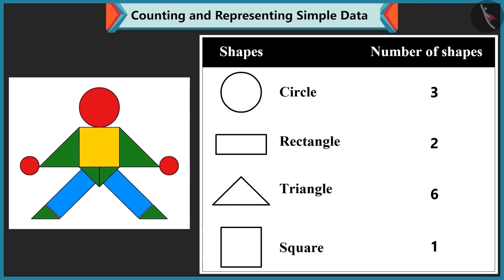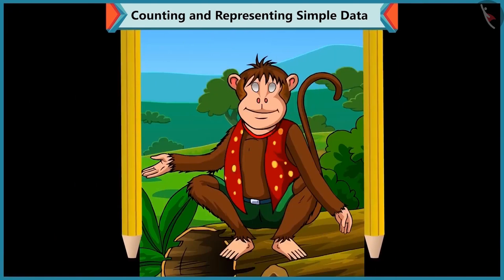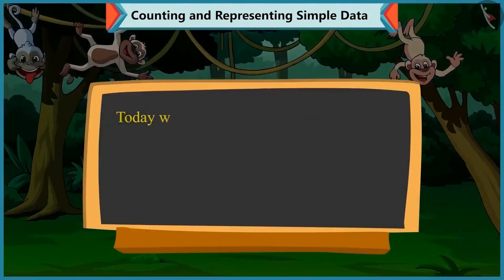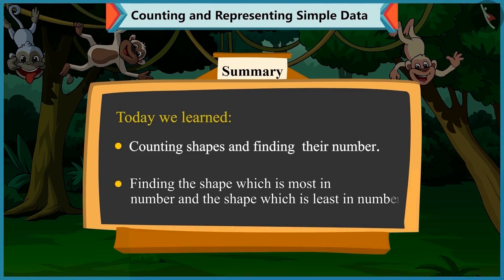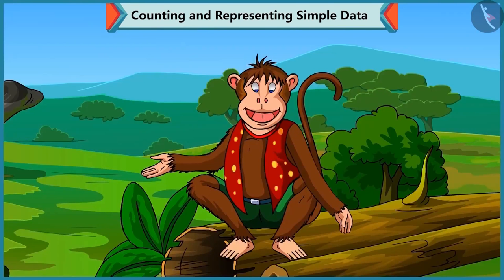Mummy says perfect. Children, today we saw how Bubbly counted the shapes and found the number of each shape. She also learnt which shape is most in number and which is least in number. In the next video, we will see some interesting examples of counting objects and representing them in numbers.